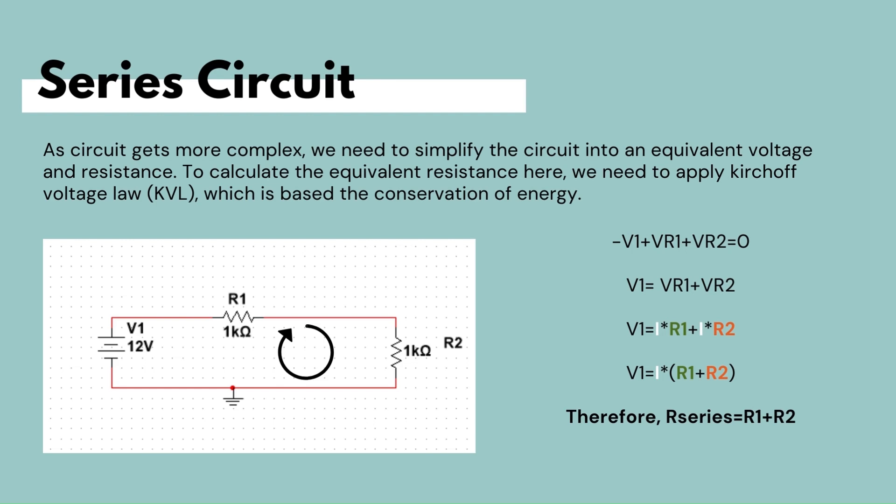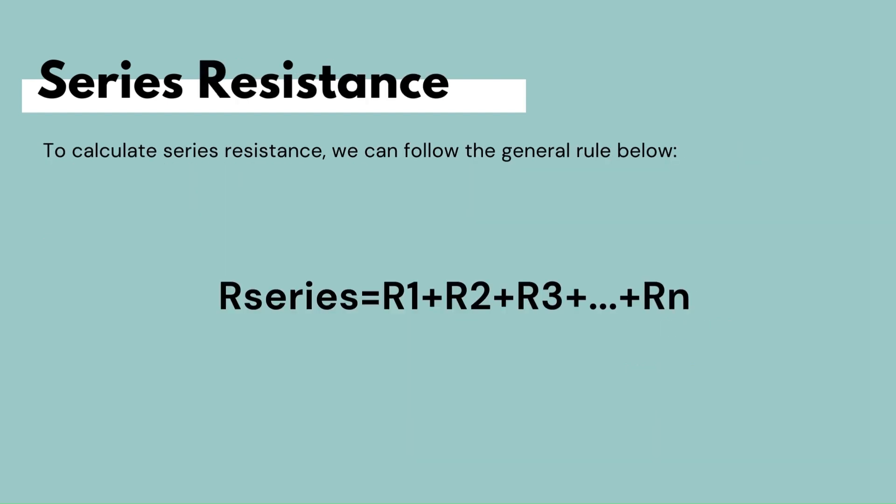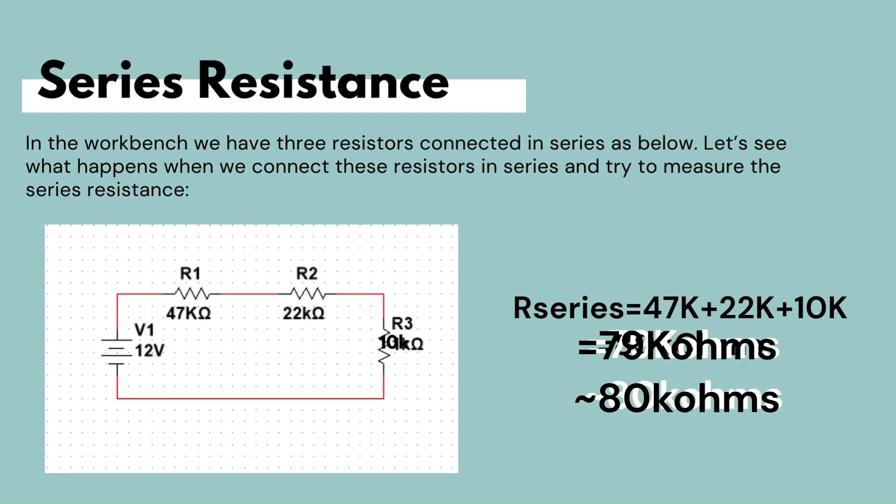In this simple circuit we add R1 (1kΩ) and R2 (1kΩ), giving a total series resistance of 2kΩ. Therefore, to calculate series resistance we follow the general rule: simply add up all the resistances that are connected in series.